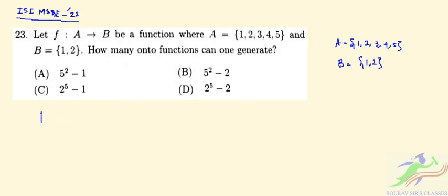For each point x, an element of A, we have two choices. There is 1, 2. So there are how many onto functions will be there?